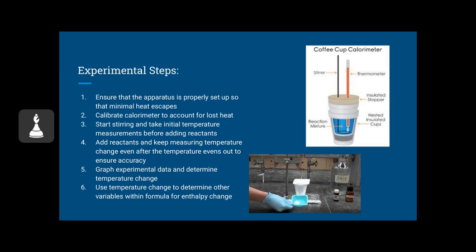And then even after the temperature evens out, we have to ensure that it's accurate by measuring it farther for a longer time. Then we're going to graph our experimental data and determine the temperature change over the time before we added the reactants and after. And we're going to use this temperature change in the enthalpy and the heat change equation to determine other variables within the formula.